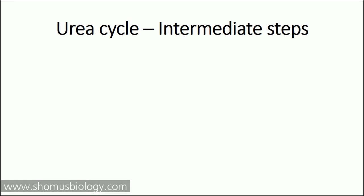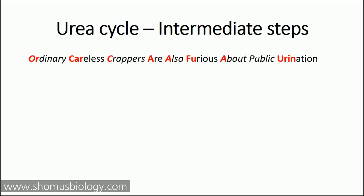The first thing we need to know is the intermediates of the urea cycle. To remember them, you need to know one particular sentence: 'Ordinary careless crappers are also furious about public urination.' Mark those words — the red colored letters in that sentence are the ones that represent the intermediates of the urea cycle.